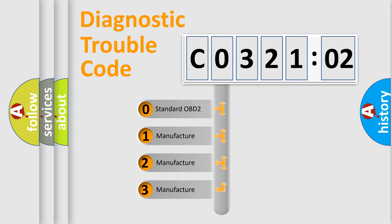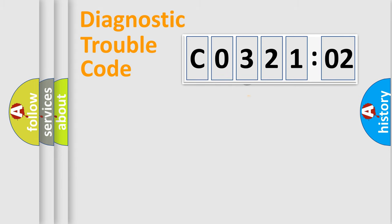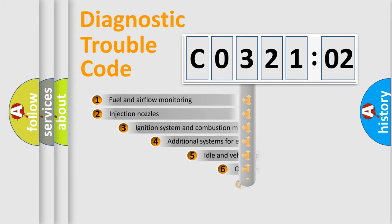If the second character is expressed as zero, it is a standardized error. In the case of numbers 1, 2, 3, it is a more prestigious expression of the car-specific error.